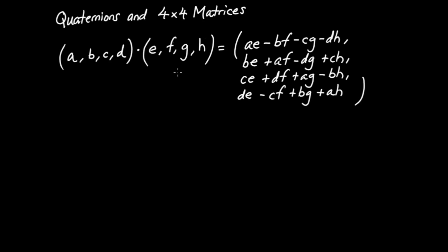In my last video, I introduced the concept of the quaternion, and I also showed you how to multiply two quaternions together. What I'd like to do in this video is make a fairly simple observation about the way in which these quaternions are being multiplied together, which is going to allow us to view the quaternions as a different sort of mathematical object, namely as 4x4 real-valued matrices.